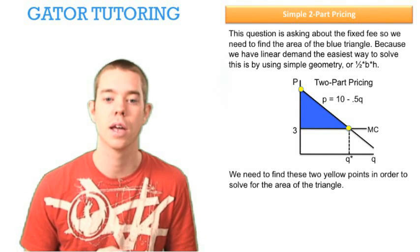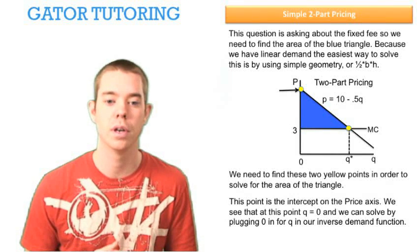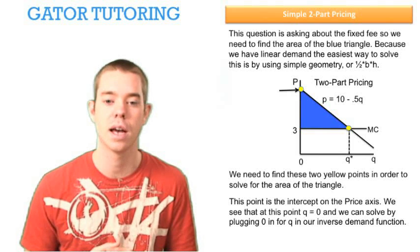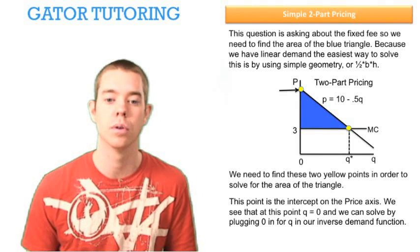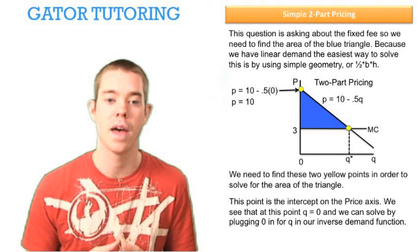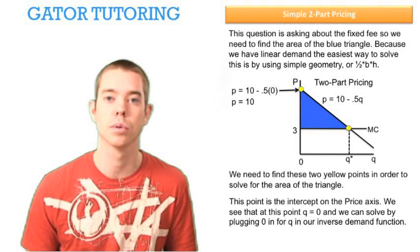We need to find these two yellow points in order to solve for the area of the triangle. This first point is at the intercept on the price axis. We see that at this point, Q equals zero. So we can solve by plugging zero in for Q in our inverse demand function, and we solve this down to see that point happens where P equals 10.